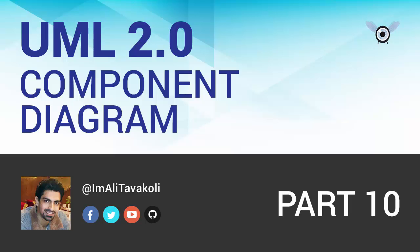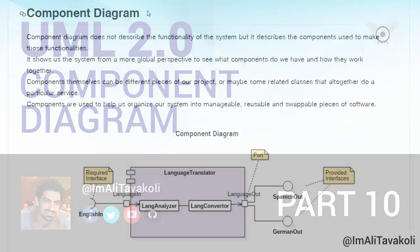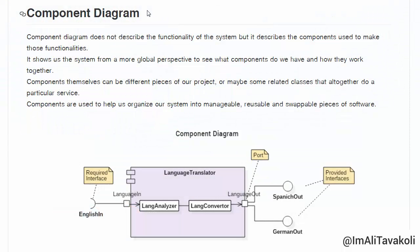Hi everybody, this is part 10 of our UML tutorial series. In this part we want to talk about component diagrams. Unlike the other diagrams we have explained so far, which show us functionality in our system, the component diagram is a little bit different. A component diagram does not describe the functionality of our system, but it describes the components used to make those functionalities.